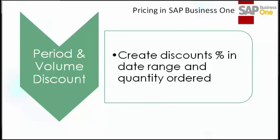The second type is period and volume discounts. The base price for the product may not be enough. You may want to set up a sales price for a limited time period, or give a discount when a customer buys in volume. Period and volume discounts allow you to define discounts by dates and based on volumes. This is very useful when a company is dealing with large quantities of goods.